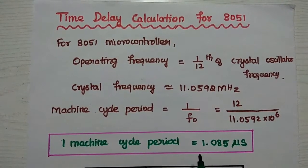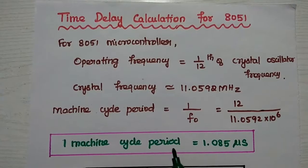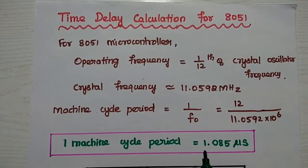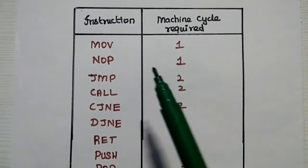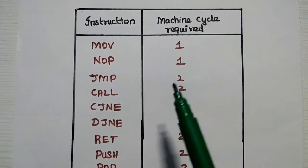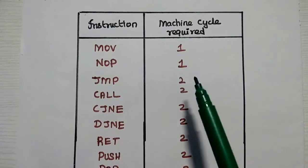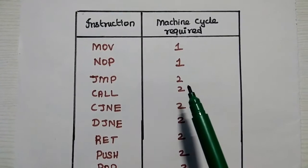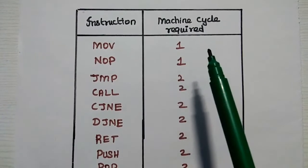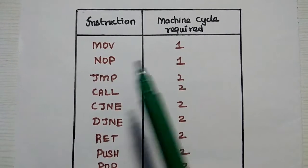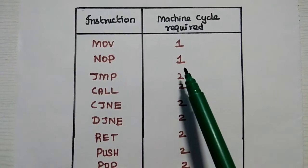This is a very important value. One machine cycle period of the AT89C51 microcontroller is 1.085 microseconds. Before solving the problems, we should know how many machine cycles are required to complete each instruction. The MOV instruction requires one machine cycle for its execution. NOP (no operation) also requires one machine cycle.